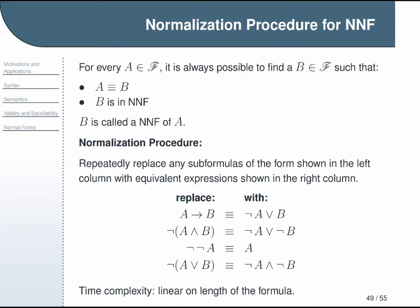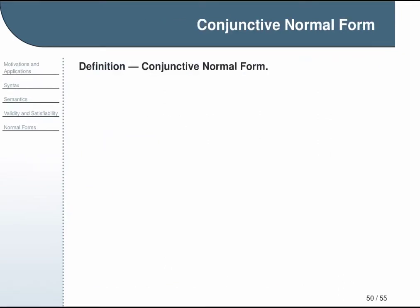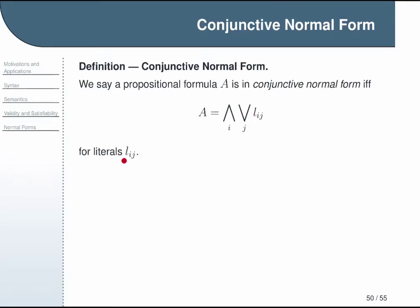Our next normal form to discuss is conjunctive normal form. In this case, if A is some formula, we say it is in conjunctive normal form if and only if it can be expressed as a big conjunction of big disjunctions of literals, where our term l_ij refers to some literal.